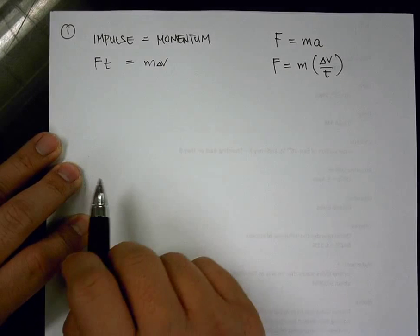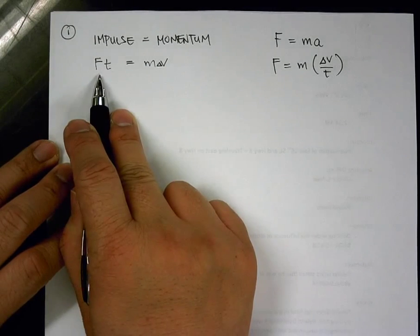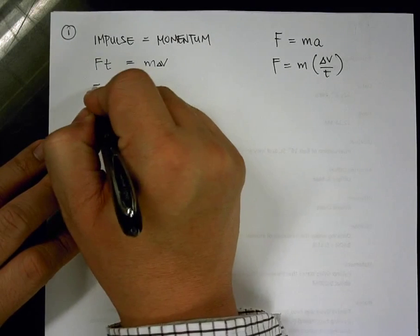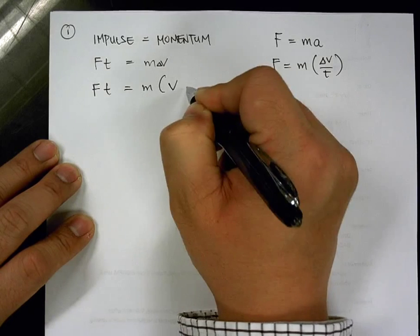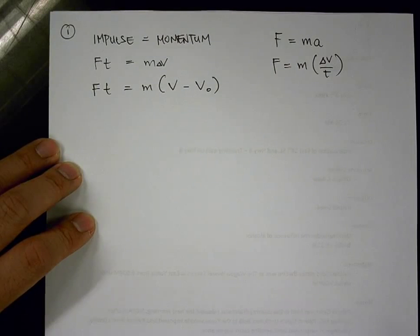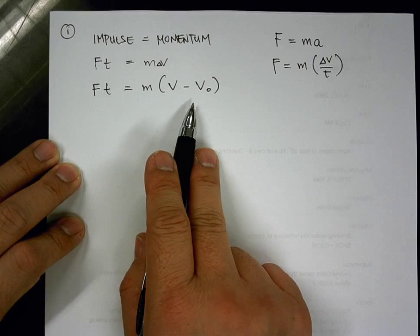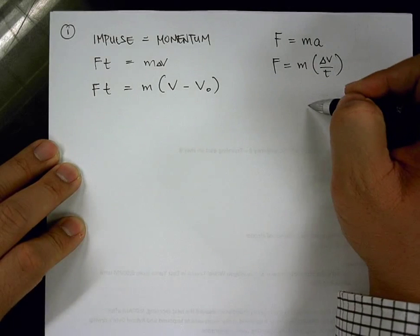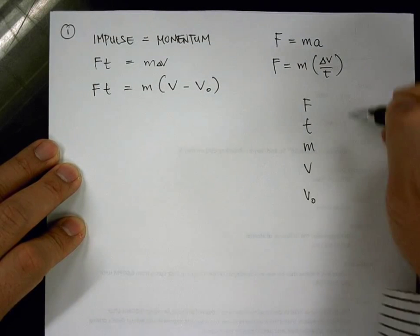So then we have this problem set out. So then now, we know we have to use this equation. If I expand this a little bit more, Ft is equal to mass times the final velocity minus the initial velocity. That's really what change in velocity means. So we have a total of five variables. So then, we should list them out: F, t, m, v, v₀.